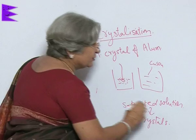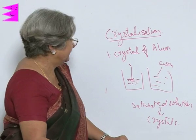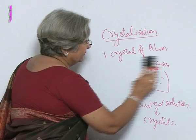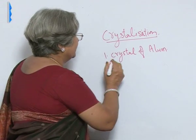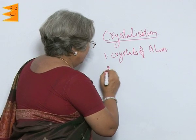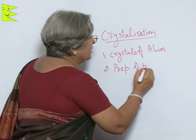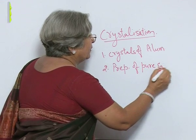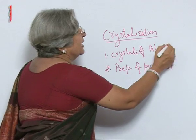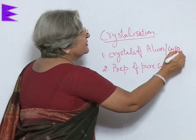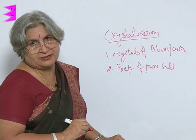This method is used to get a pure form of a solute. The second advantage of crystallization is the preparation of pure salt and getting crystals of alum or copper sulphate. This is another method for separating substances.